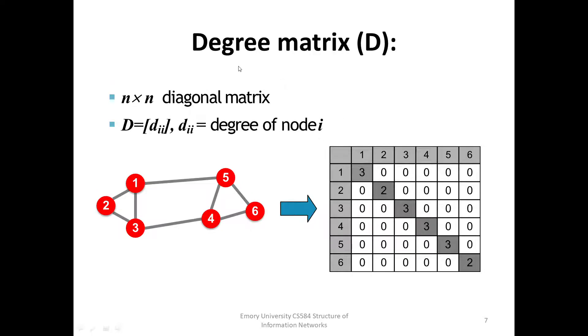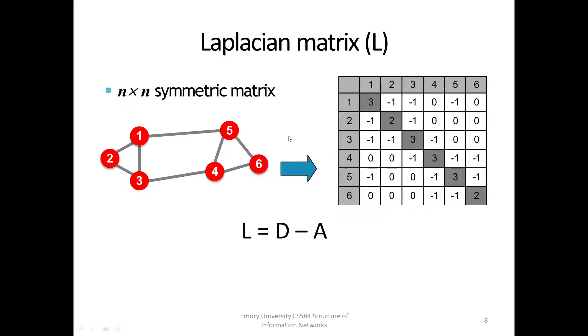Degree matrix D has the degree of node i as the i's diagonal entry. Since node 1 has a degree of 3, the corresponding entry is 3. Laplacian matrix L is equal to matrix D minus matrix A. Laplacian matrix has really amazing properties, though I will not give proof here.